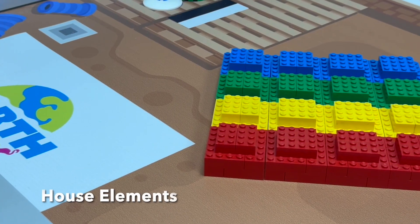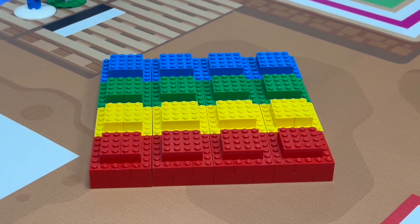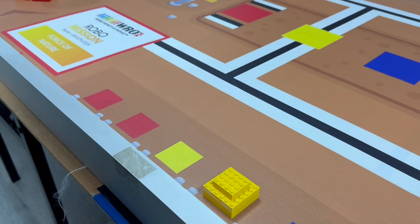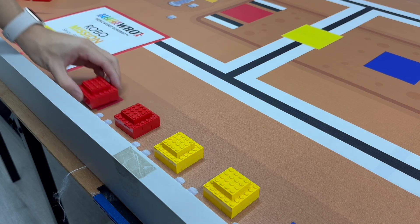There are 16 house elements: 4 red, 4 yellow, 4 blue, and 4 green. 4 red and 4 yellow house elements will always be placed next to the two different start areas.